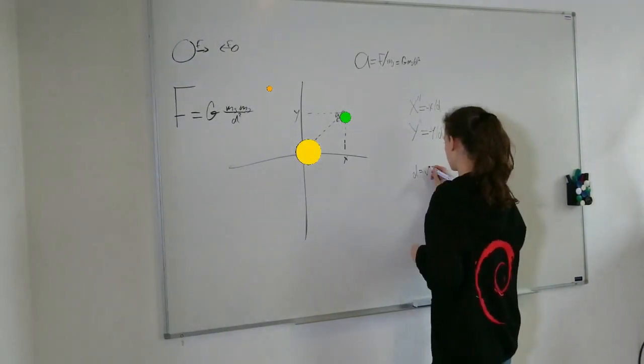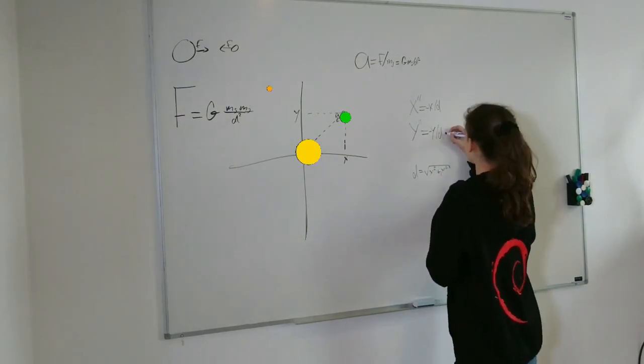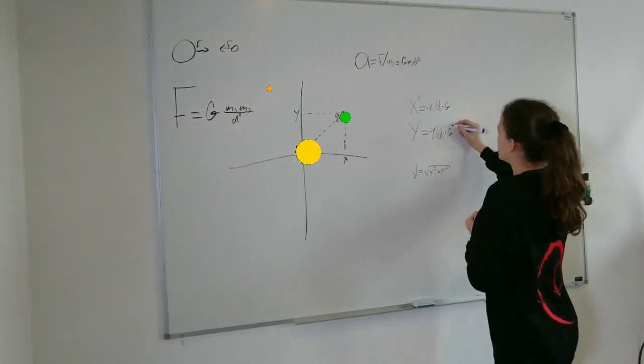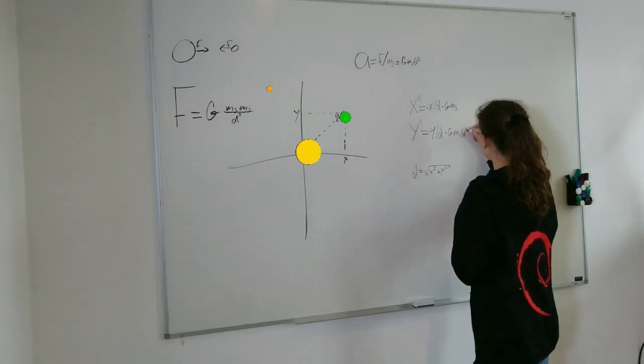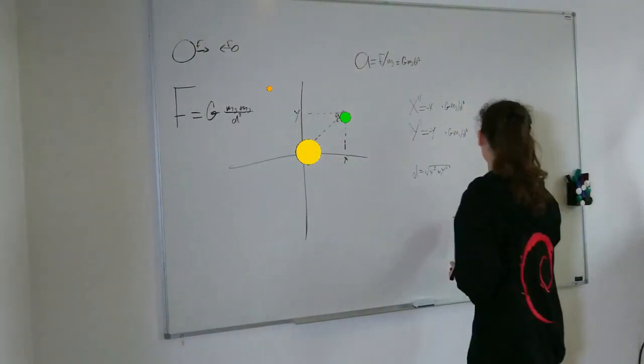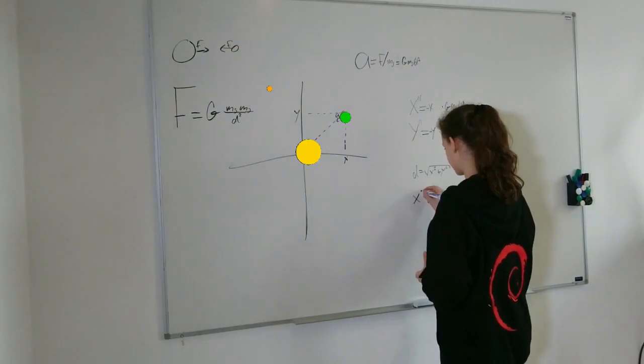First we give the vector the right direction. Afterwards we will reduce the length to one with the help of Pythagoras. And at the end we multiply by a to give it the right length.